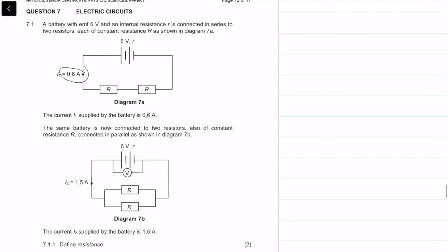We can see this and there is a 0.6 amp current going through the entire circuit. Then it says the same battery is now connected to two resistors also at a constant R but now in parallel. The current i2 is 1.5 amps this time.